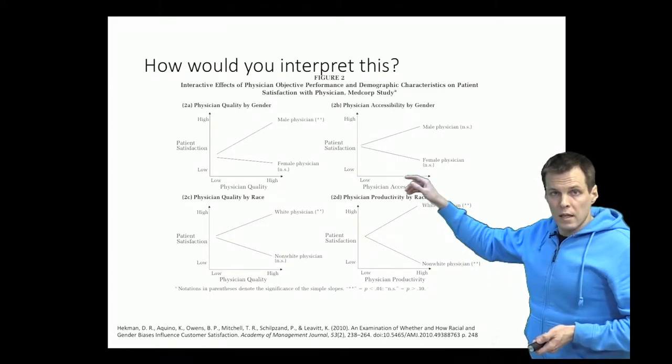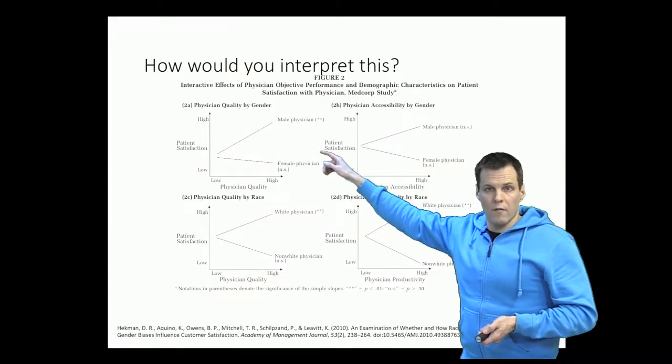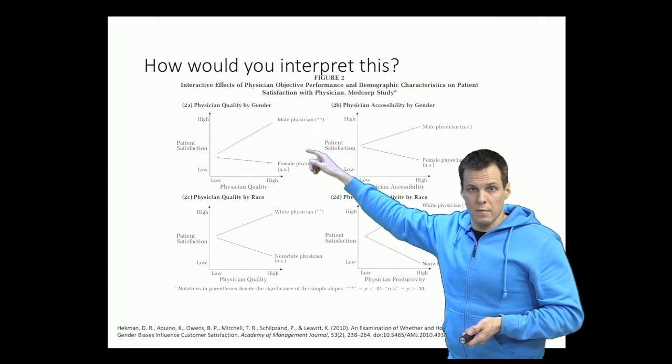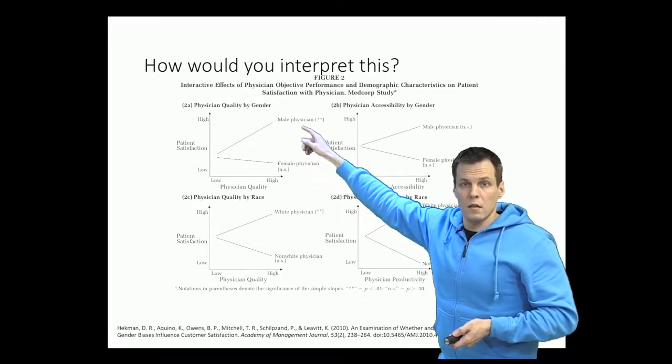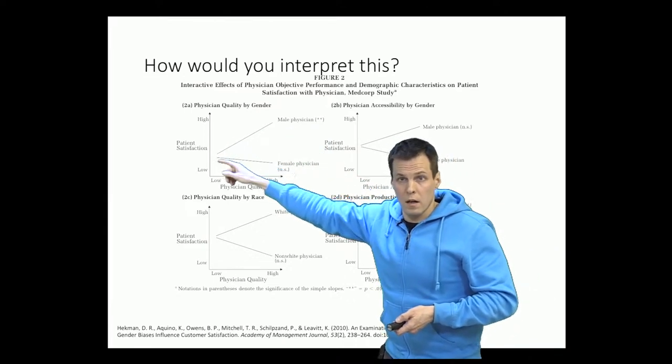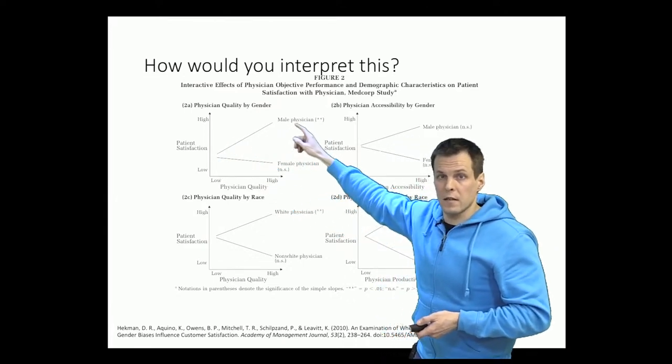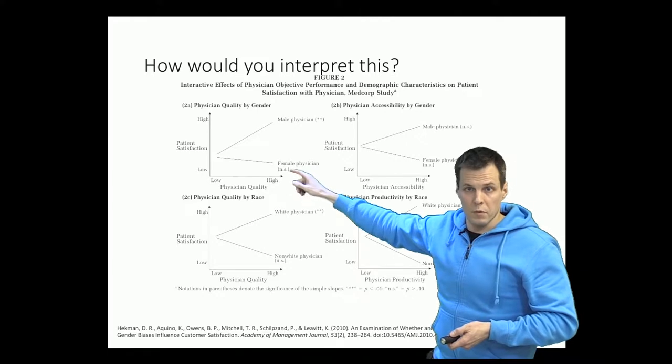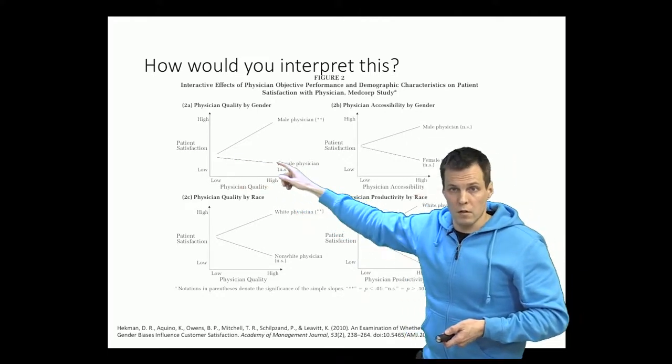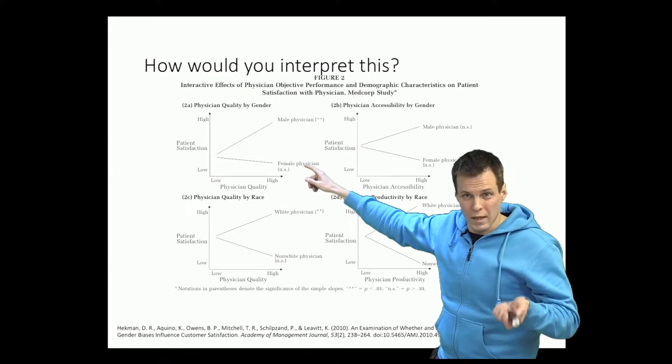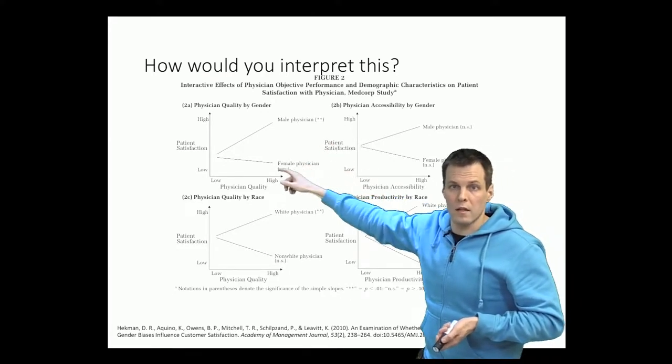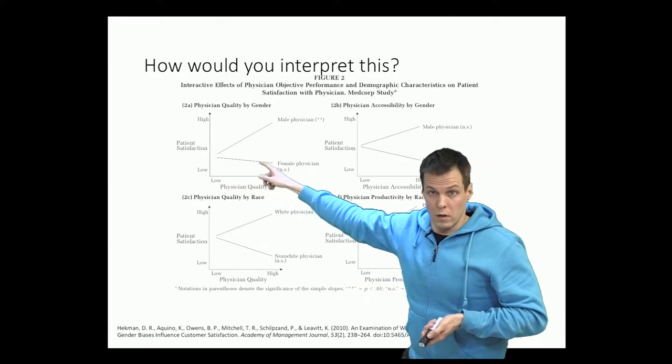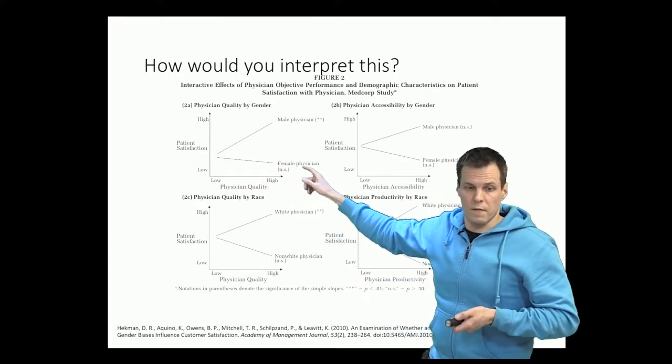So we can see here that we have males versus females. So this is our physician quality for males leads to a strong increase in satisfaction. For females the simple slope, slope holding females constant, holding females at 0 or 1 depending on how this variable is coded, results in no increase in customer satisfaction.